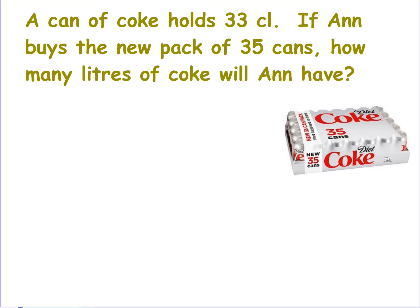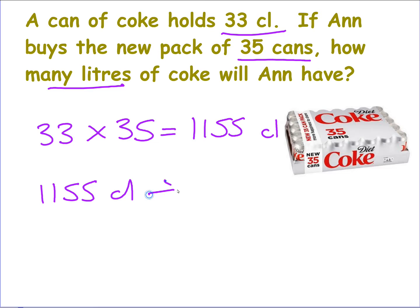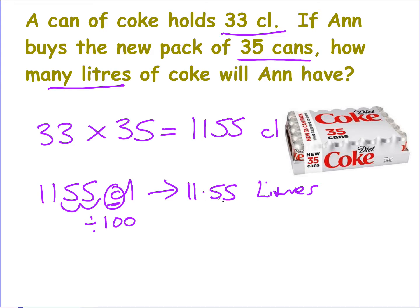A can of Coke holds 33 centilitres. Anne buys 35 cans — how many litres of Coke does she have? Multiply 33 by 35 to get 1,155 centilitres. Then convert to litres — small to big, divide by 100 — giving 11.55 litres.